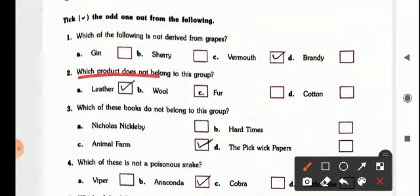Next, which product does not belong to this group, so it is cotton, not leather. Because leather, wool, fur, all are made from the skin of the animal, but cotton is from plant.